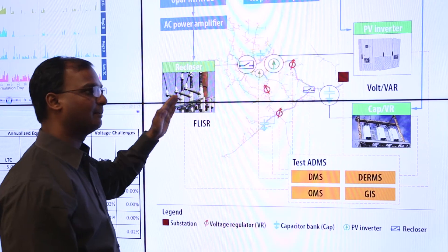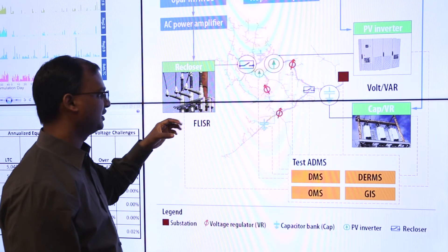I think it's a very good match of three entities: Duke providing the real feeder data, GE Grid Solutions providing the advanced distribution management system solution as a package, and us really creating the right environment as a utility to evaluate the algorithm.